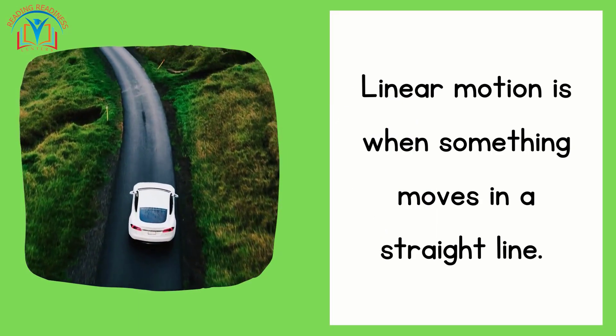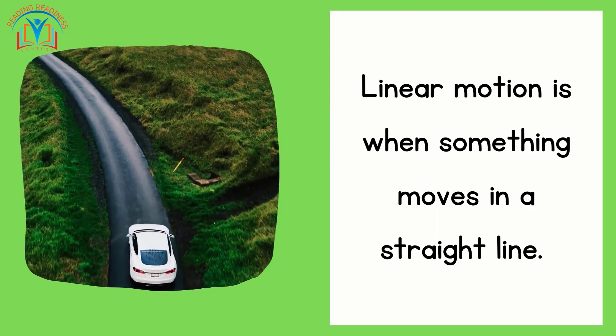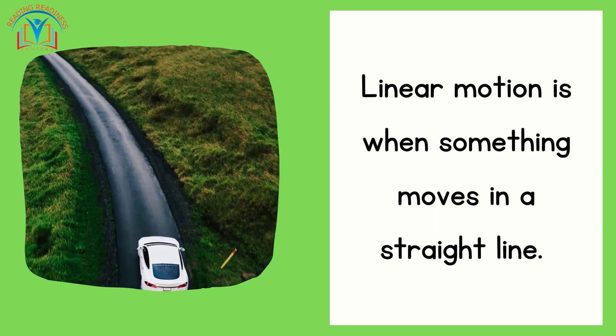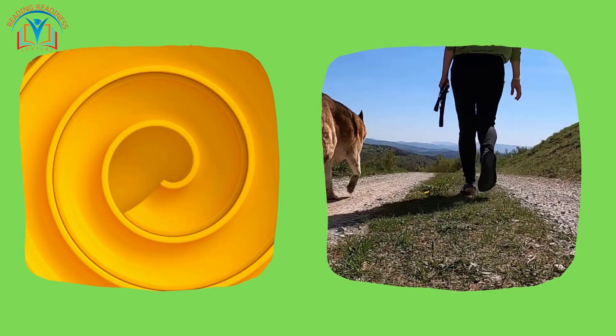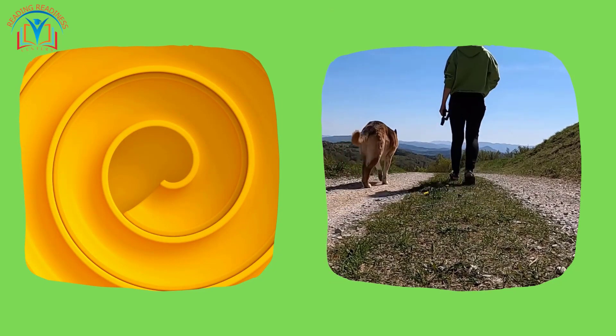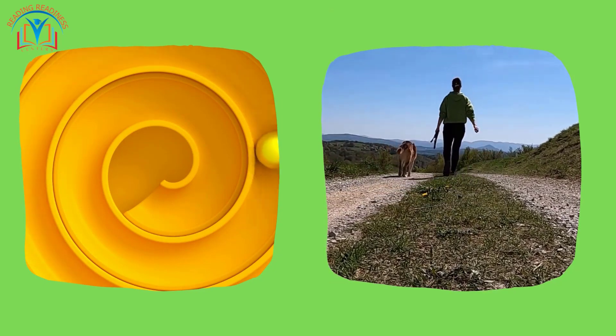Linear motion is when something moves in a straight line. Examples of linear motion include a car driving down the road, a ball rolling on the ground, and a person walking.